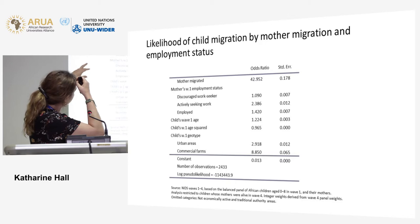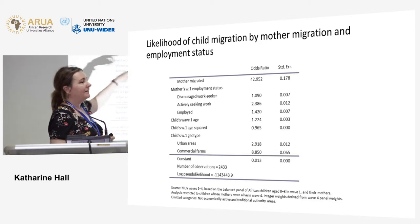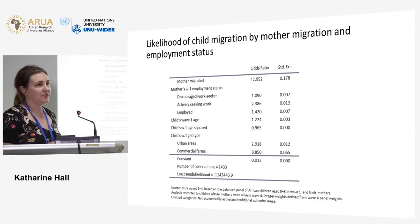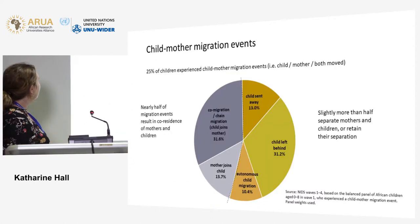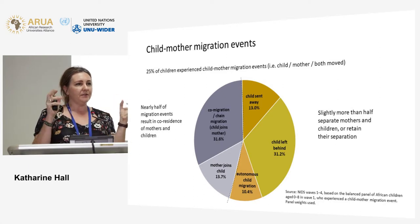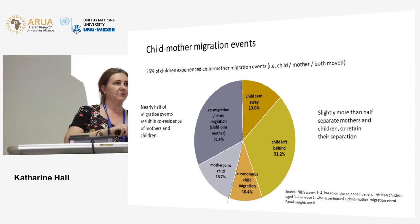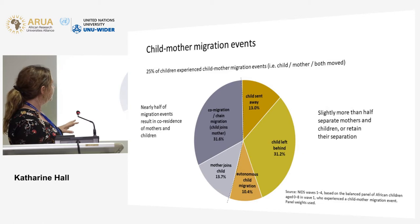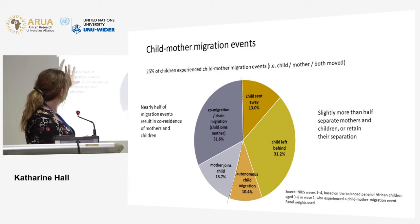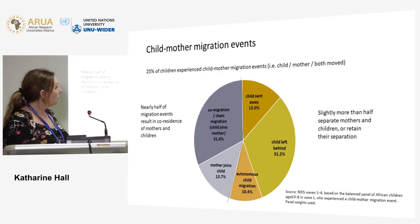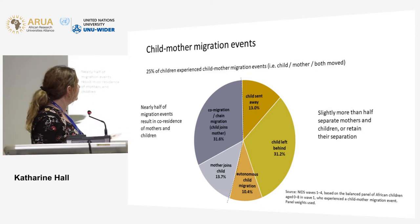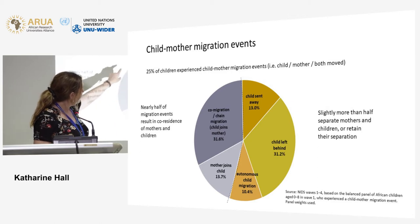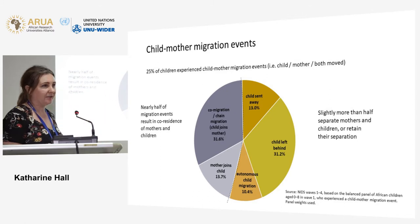Children's migration is strongly related to the migration of mothers — if mothers migrate, children are more likely to migrate, though not necessarily at the same time or in the same direction. Creating a typology of migration events where either the child moves, the mother moves, or both move, we see that nearly half of migration events result in children living together with mothers, but more than half result in children living separately — children sent away, children left behind, or autonomous child migration — with the other major segment being sequential migration of children to join their mother.